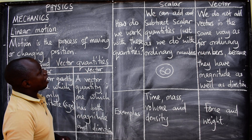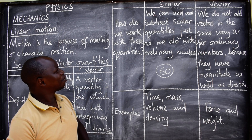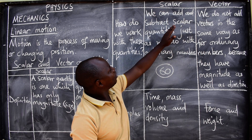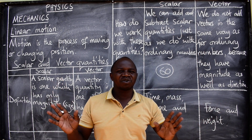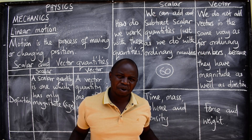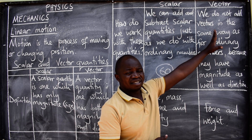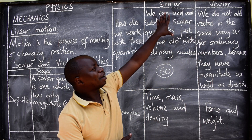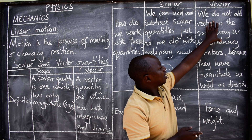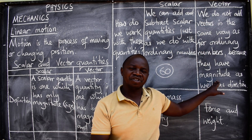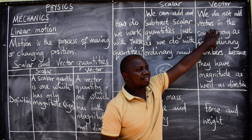How do we work with these quantities? For scalar quantities, we can add or subtract them just as we do with ordinary numbers. But for vector quantities, it is not the same way we add ordinary numbers, because vectors show both magnitude and direction. I'll give you an example of this. When we have three points — let's say A, B, and C — and we want to add vector AB, there's a specific pattern.